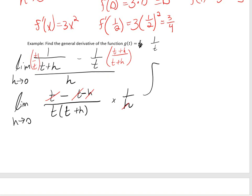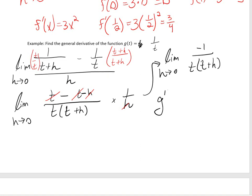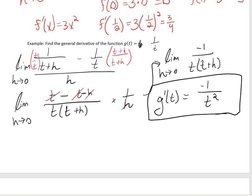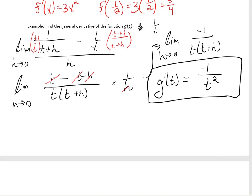What we're left with is the limit as h approaches 0 of negative 1 divided by t times t plus h. We can't simplify further, so we plug in 0 for h, giving us negative 1 divided by t times t. So our derivative is negative 1 divided by t squared. You can see where the limit rules from earlier really help us out.